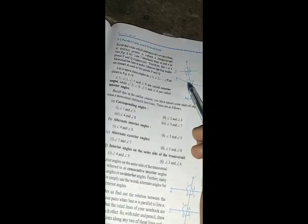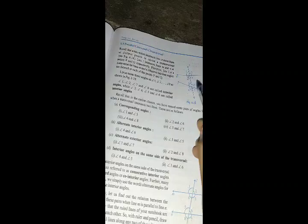Angles 3, 4, 5, and 6 are interior angles. Angles 1 and 5 are corresponding angles. Similarly, 2 and 6 are corresponding, 4 and 8 are corresponding, and 3 and 7 are corresponding.